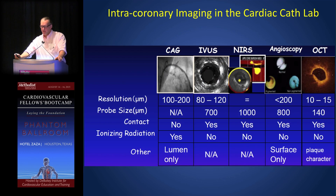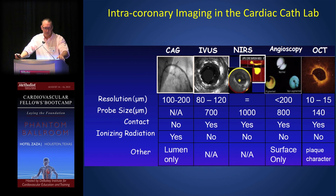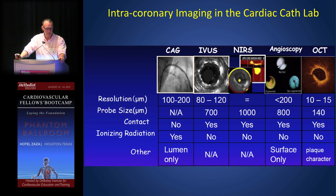Here are your tools in the cath lab to further image the coronary arteries. You heard about angiography. I'm going to spend a little bit of time talking about IVUS. Near-infrared SPECT is just now starting to get a little bit of momentum as far as potential clinical utility. Angioscopy is something you'll probably never see except in an old journal somewhere. And OCT you'll see more and more of - it's very high resolution, and sometimes the problem is it's so good you don't know what to do with things you never thought you'd see.